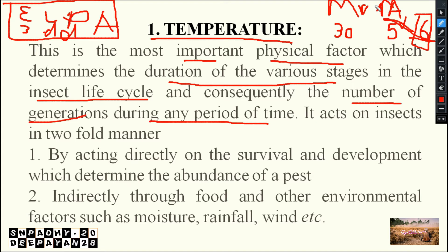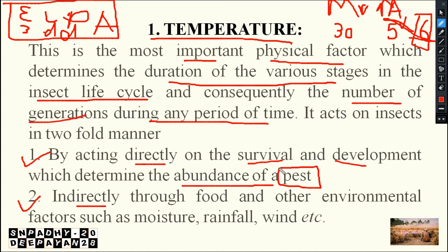Temperature affects in two ways: first, directly; second, indirectly. Temperature will directly affect the survival, development, growth, and abundance of the insect or pest. A pest is an organism which causes harm to human beings or human welfare — for now, understand pest as simply a harmful insect.